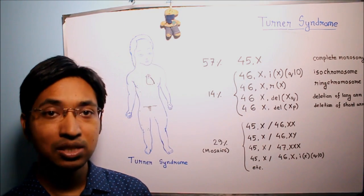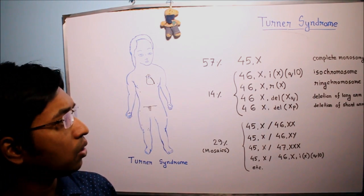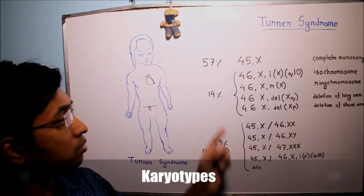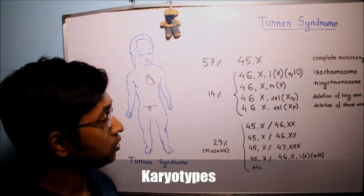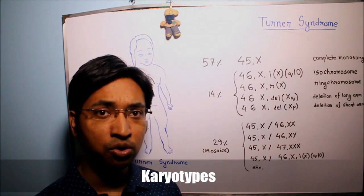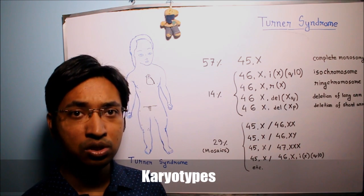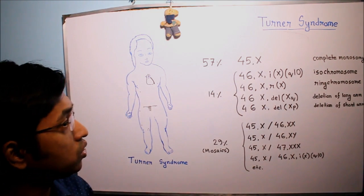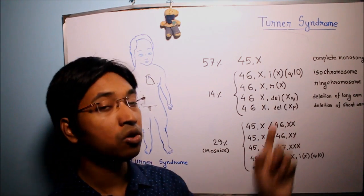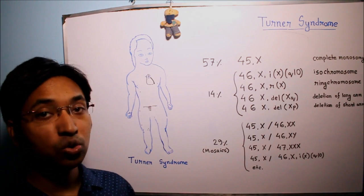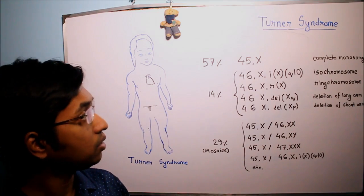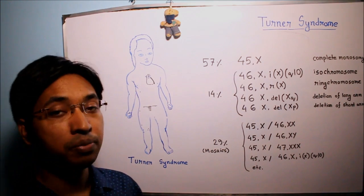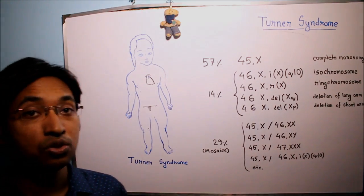Now we will talk about the various karyotypes of Turner syndrome. As you can see on the whiteboard I have already written a lot of karyotypes. In Turner syndrome we will see three types of karyotypic abnormalities. In 57% of the cases the individual with Turner syndrome will have complete monosomy of X chromosome — the total number of chromosomes will be 45 with only one X chromosome instead of the usual two.